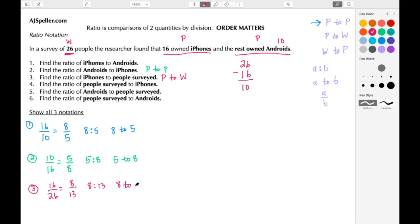Moving on to number 4, find the ratio of people surveyed to iPhones. Well, this here is going to be a whole to a part. Well, the whole is 26 and we know that the iPhone users is 16. Again, we can simplify by dividing everything by 2 to end up with 13 eighths. We can rewrite as 13 to 8 and we can write 13 colon 8.